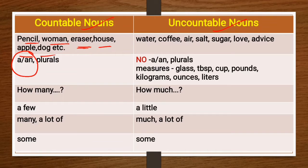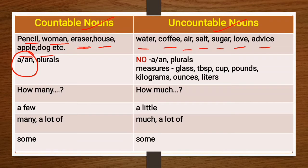Uncountable nouns are those nouns which we cannot count, like water, coffee, air, salt, sugar, love, advice, and so on. We cannot count air; we cannot count water because air is a gas, and milk, water, and oil are liquids.